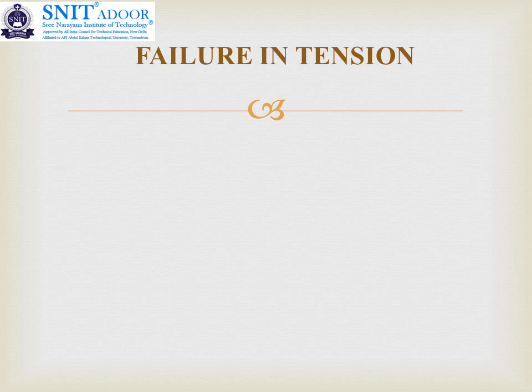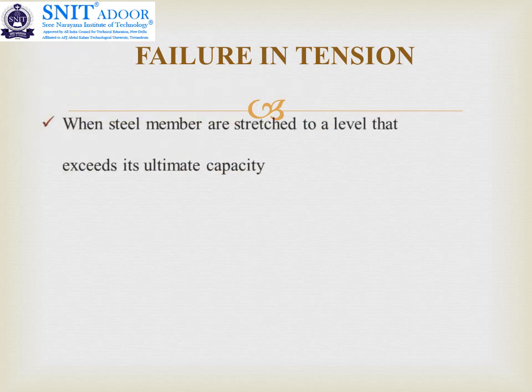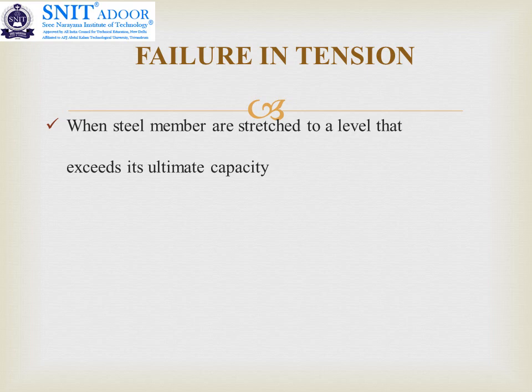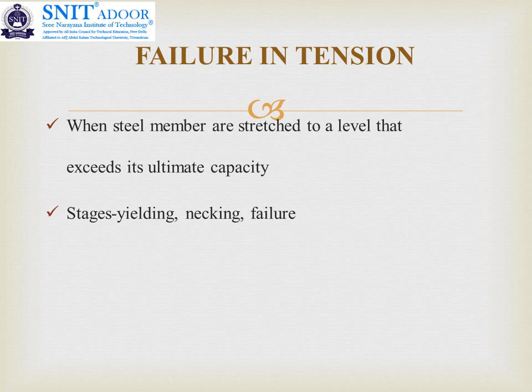Next is failure in tension. Compression, tension, and shear are the various kinds of stresses that act upon any load-bearing structure. When steel members are stretched to a level that exceeds their ultimate capacity, it leads to failure. The stages of failure include yielding, necking, and finally failure — you may remember this from the mild steel test in your material testing lab. The possibility of this type of failure is usually rare.